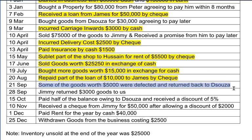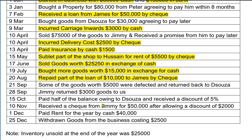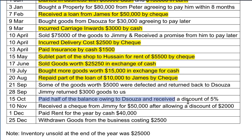Some goods were defective and returned to D'Souza. When we originally bought goods from D'Souza it was on credit, meaning we hadn't paid yet, so D'Souza does not refund us money since we never paid for those goods. This is a credit transaction and does not involve cash or bank. Similarly, Jimmy returned goods to us, but since we sold to Jimmy on credit and he hadn't paid yet, we cannot refund him — this is also a credit transaction.